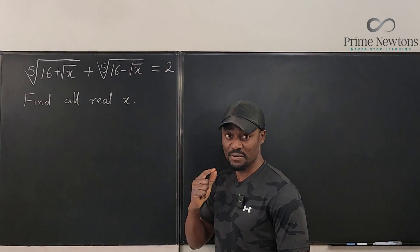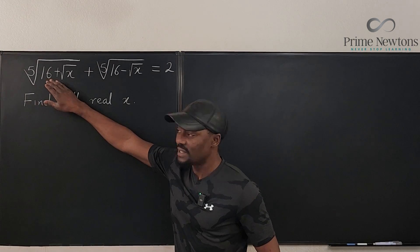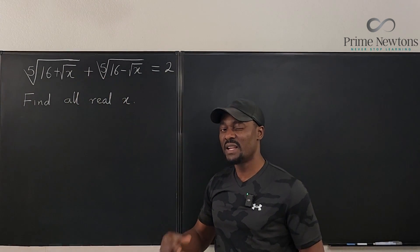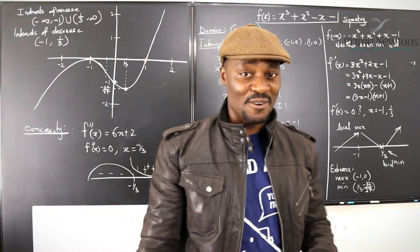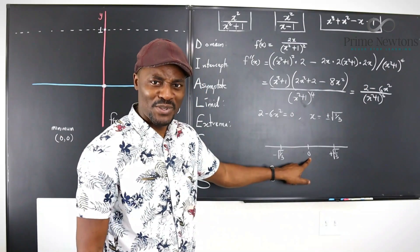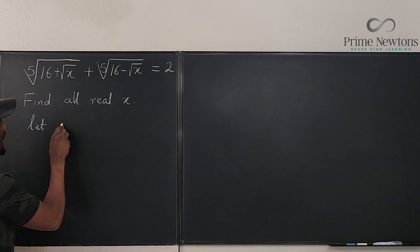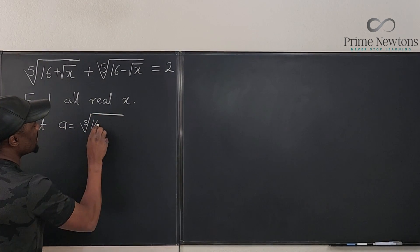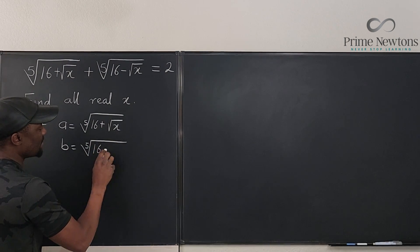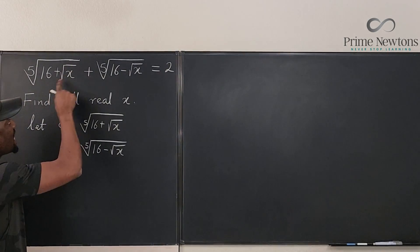I always like to use a general strategy in case it's not easy to guess. So what would I do? Like I did in the previous one, I am going to say: let the first one here be 'a', let this be 'b', and this is our typical 'c'. But c is given and the unknown is inside the radical. So let a be equal to the fifth root of 16 plus the square root of x, and let b be equal to the fifth root of 16 minus the square root of x.